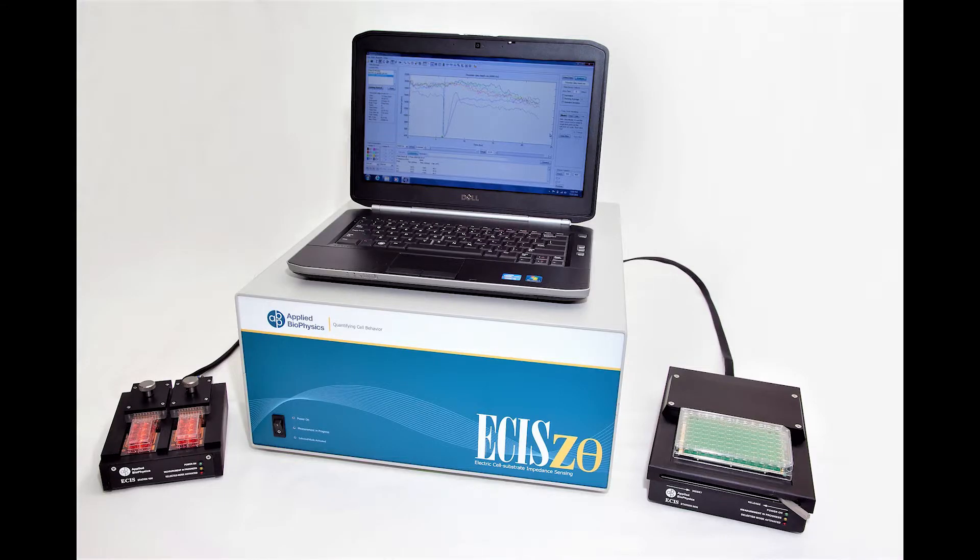These instruments connect to devices in the incubator space. On the left-hand side of each instrument is a 16-well holder that accepts two of the eight well slides. And on the right-hand side of each instrument, a 96-well holder for monitoring more wells to provide higher throughput.